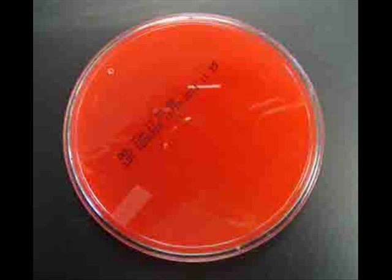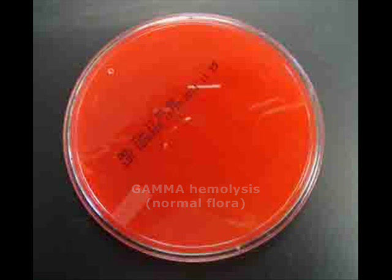Here's the bottom of a blood agar plate, and although there was growth on the top portion, when I flip that plate over and look at the underside I can see that the medium has not changed at all. It looks as if it were a brand new plate of blood agar. This means the bacteria growing there do not produce hemolytic enzymes, so this is gamma hemolysis, indicating normal flora.